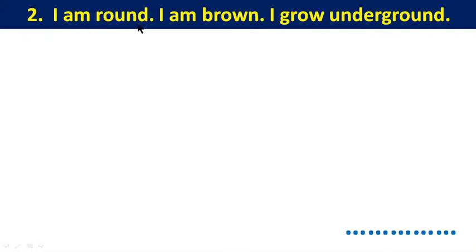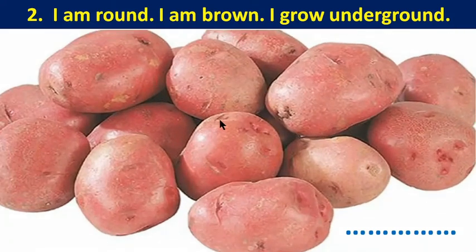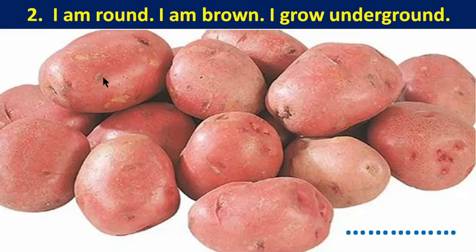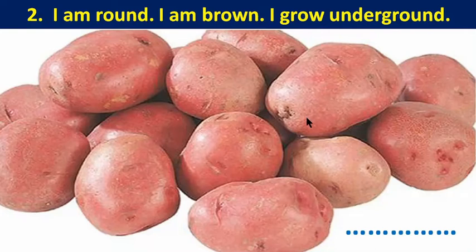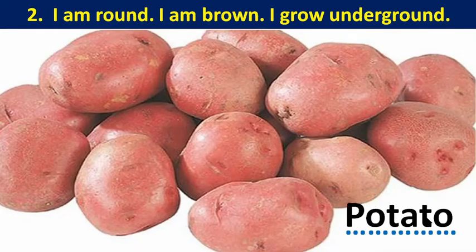Number two: I am round or circular, and I am brown — that means my color is brown. I grow underground. This vegetable is round, its color is brown, and it grows underground, so it is potato.